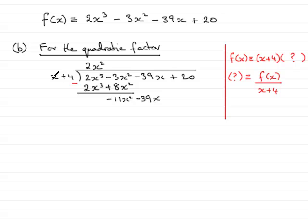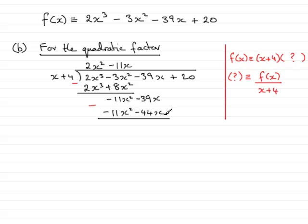What do you multiply x by to get minus 11x squared? That would be minus 11x, and that goes up here: minus 11x. Now we multiply minus 11x with the x plus 4. So minus 11x times x is minus 11x squared, and minus 11x times plus 4 is minus 44x. Now we subtract these two expressions from one another. So minus 11x squared minus minus 11x squared is 0. Then we have minus 39x minus minus 44x, so that's going to be 5x. And then we bring down the plus 20, putting it behind the 5x, and we start all over again.